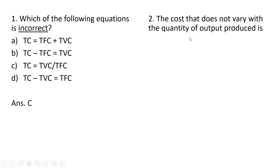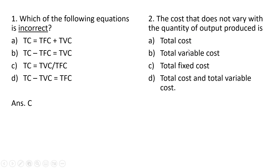Number two: the cost that does not vary with the quantity of output produced is total fixed cost. Total cost varies with output produced, as does total variable cost. So the correct answer choice here is total fixed cost — it is a constant and does not vary with output.